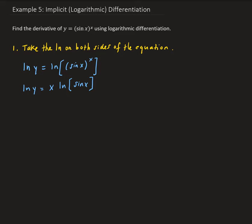The next step is to apply implicit differentiation to solve for dy/dx. On the left-hand side, the derivative of natural log y is 1 over y times y prime, so we have 1 over y times dy/dx.